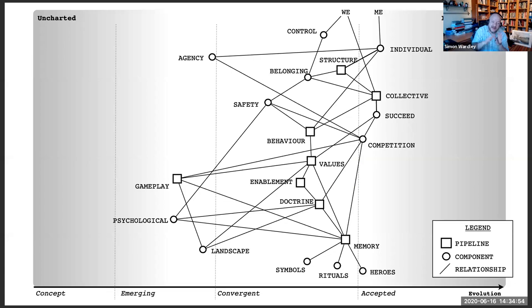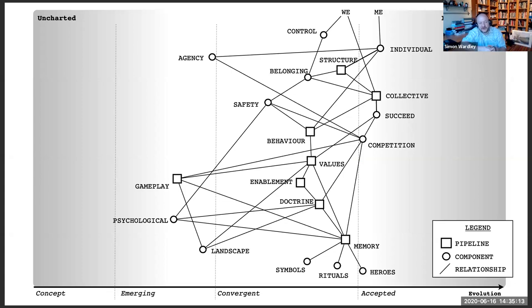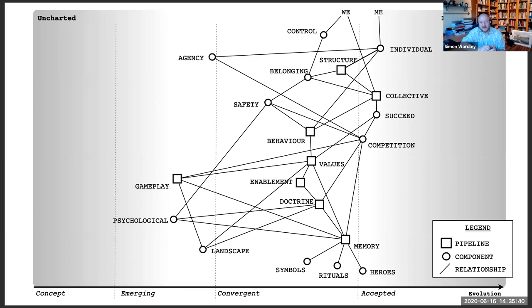Starting from the top, the two anchors are 'we' and 'me.' All of us have elements of individualism and collectivism — none of us are truly one or the other. The 'me' is concerned about the individual and the agency of the individual. That agency matters in competition with others; if there is no competition, there is no power. The 'we' is about belonging to the collective and collective control of the environment.